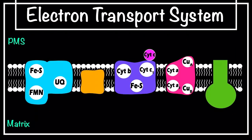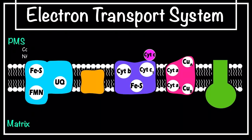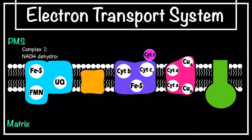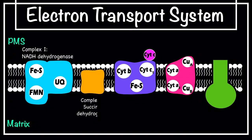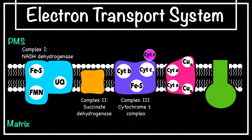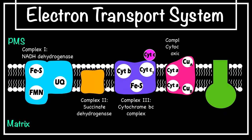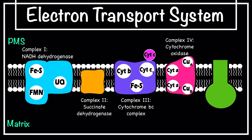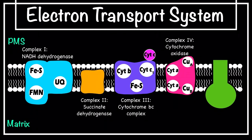The first is Complex I, also called NADH dehydrogenase. The second is Complex II, also called succinate dehydrogenase. Complex III is also known as the cytochrome bc1 complex, while Complex IV is called cytochrome oxidase or the cytochrome a/a3 complex.